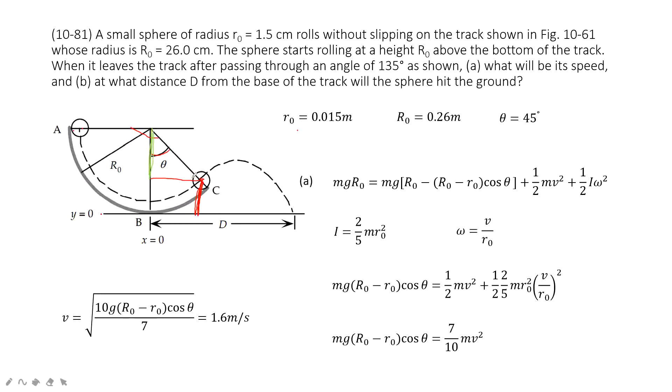We can consider this is a triangle. And this length, this side times cosine theta is this side. And then this side, how much? It's R₀ minus small r₀.